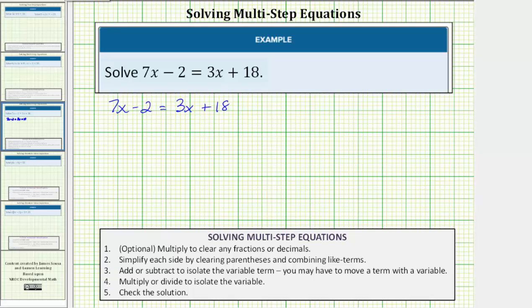To undo positive 3x, we would subtract 3x on both sides of the equation. So let's subtract 3x on both sides as our first step. And now we simplify both sides. 7x minus 3x is 4x. So the left side simplifies to 4x minus 2.